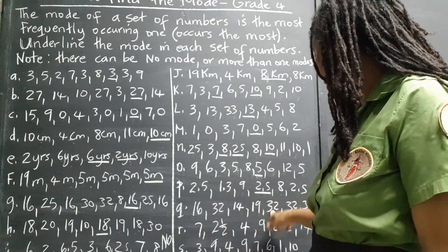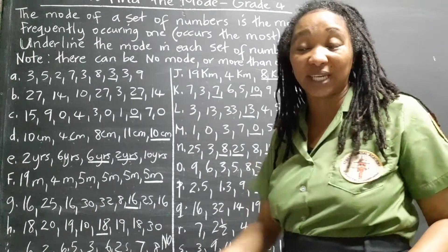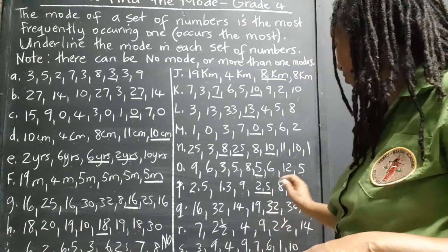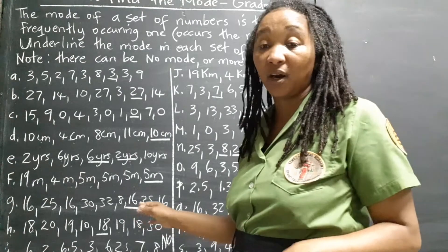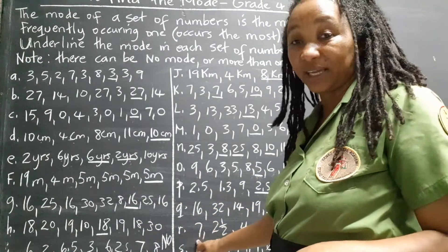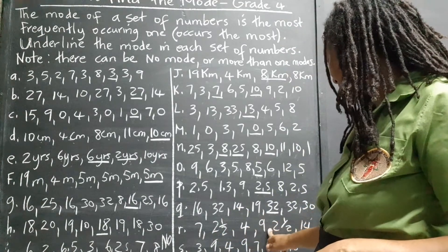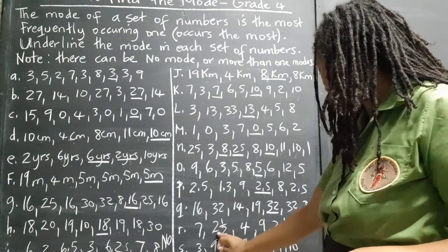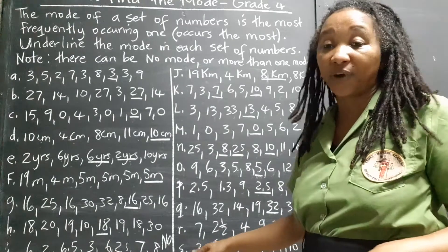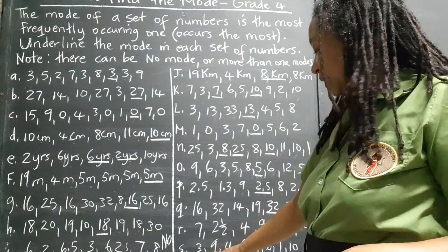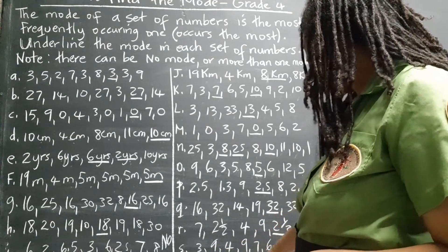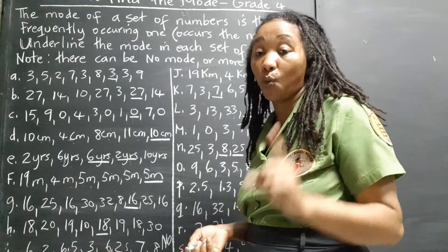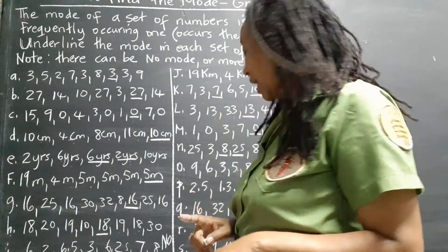Set Q: 16, 32, 14, 19, 32, 32, 32, 30. Which one is popping out? You could hear it while I'm calling it — 32, 32, 32. There are four 32s and only one of each other number, so 32 is the mode. Set R: 7, 2.5, 4, 9, 2.5, 14. Two and a half is the mode — there are two of them and only one of each other number. Set S: 3, 9, 4, 9, 7, 6, 1, 10. There are two nines, so 9 is the mode. All other numbers have a frequency of one; the frequency of 9 is two.